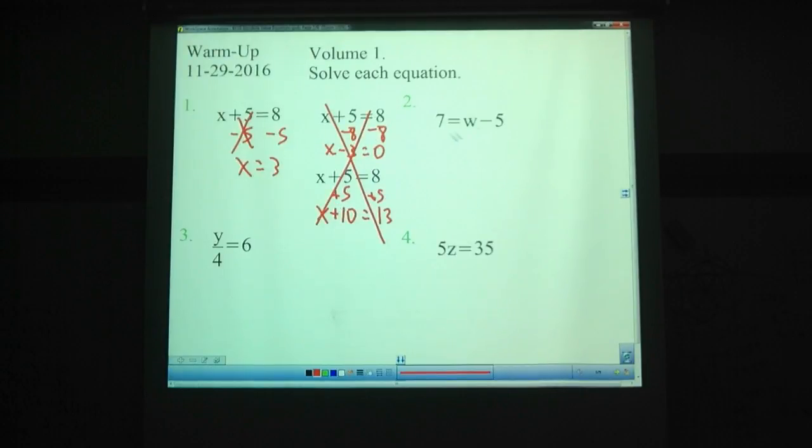Number 2. And this one, the issue I had here is that people get thrown off when the unknown is on the right side of the equation. We still do the same thing, though. We've got a 7 and a 5. Which one's on the same side of the equation as the w? The 5. Notice those are two sides, so we need to get rid of that 5. It's a minus 5. That's a negative 5 already. We need to do a plus 5 to get rid of it. So plus 5, 12 equals w.